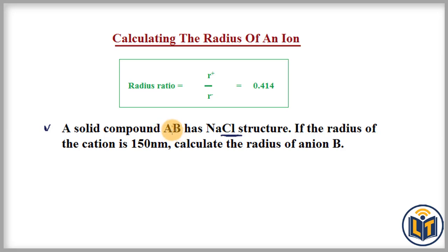The question says that if the radius of the cation is 150 nanometers, calculate the radius of the anion. Yes, we need to look at the structure. You can see that the AB compound has NaCl structure.